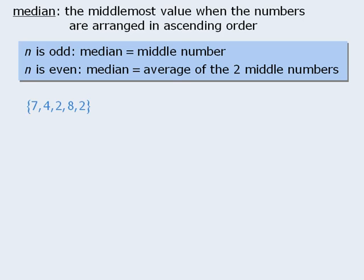Let's look at some examples. To find the median of this set, we will first rearrange the terms in ascending order. Now, this set has an odd number of values, so the median here will be the middle value, which is 4.